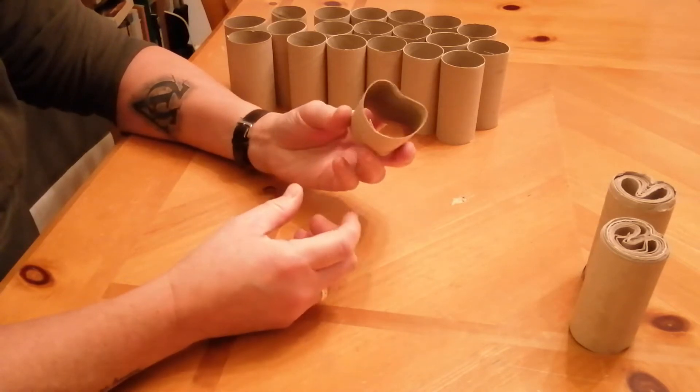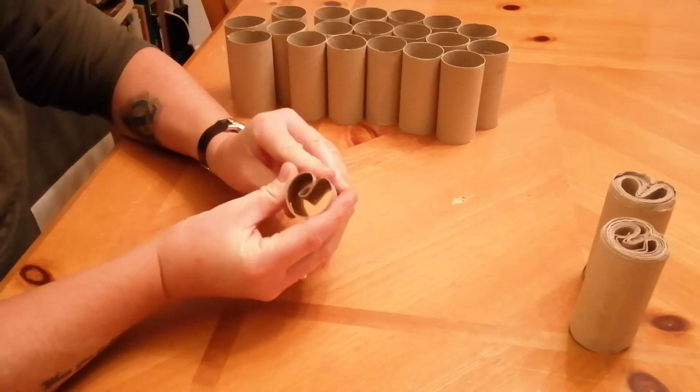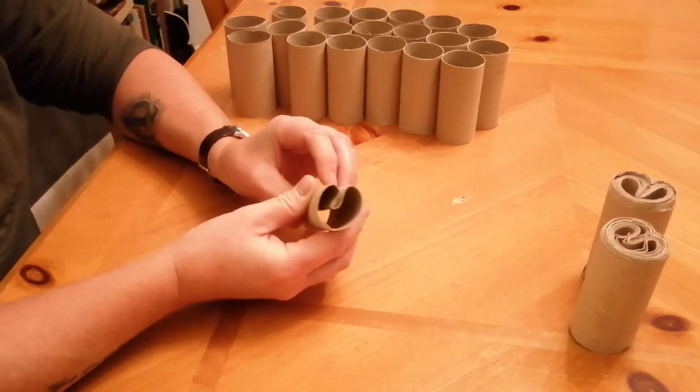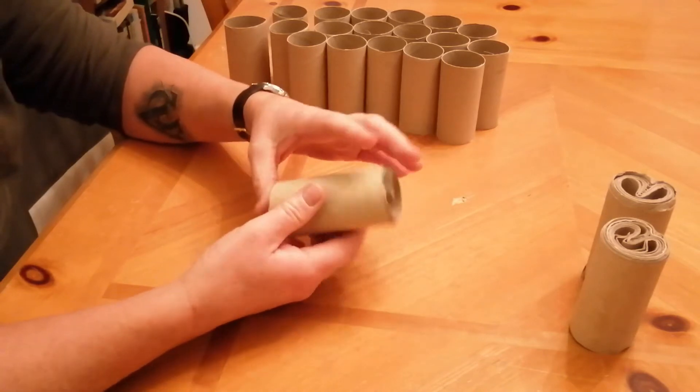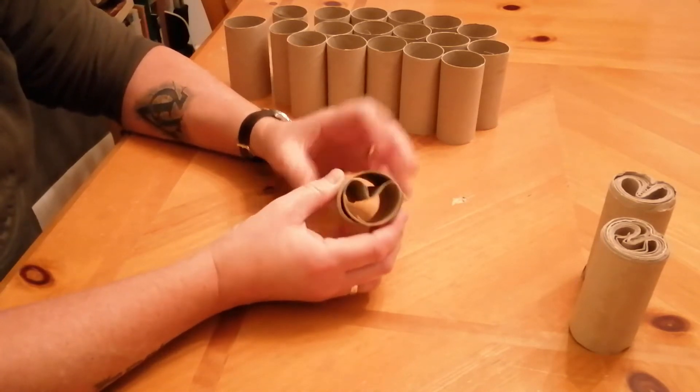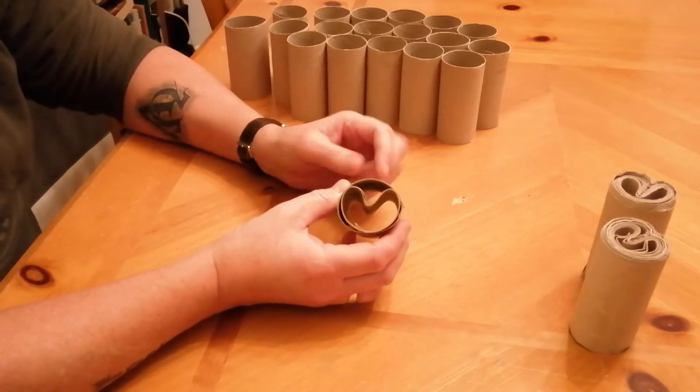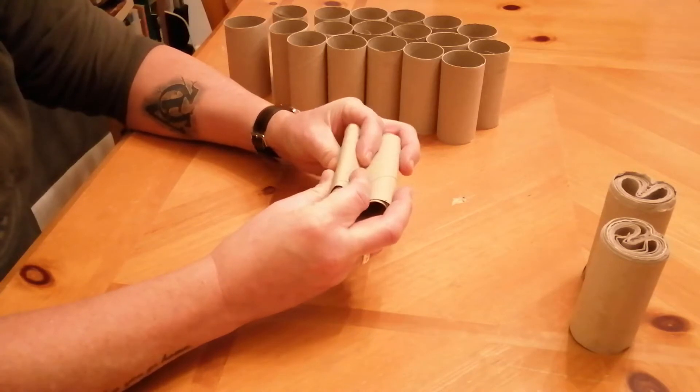So start with your first one and you want to just basically fold it in like that and simply slide it inside your second one. Now it helps if you get them all from the same size toilet tissue roll because if you don't you might find that they won't go in so easily.